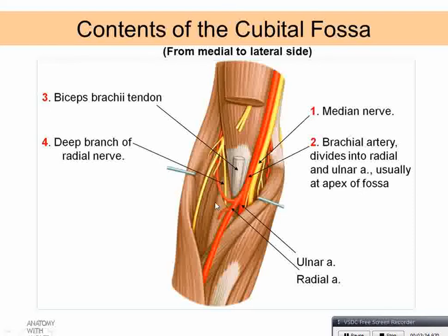The floor muscles brachialis, which is deep to biceps brachii, and the supinator can be seen in this area forming the floor. The deep branch of the radial nerve will pass between the two heads of supinator onto the posterior compartment of the forearm.